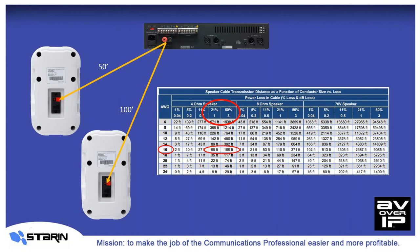Now, if we run maybe 100 feet or so to a second fill speaker, which would give us a 4-ohm load, we'll lose about 21% of our power, which equates to only 47.4 watts delivered to the main speaker. You can see that the 100-foot cable losses are somewhere around 38% of power, delivering about 37.2 watts to the fill speaker. Some amps are able to push more output to a 4-ohm load, so that would help some. But this shows you that the sound level is uneven across multiple speakers.